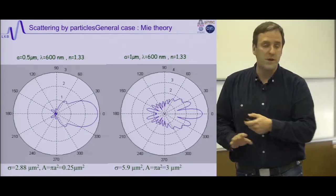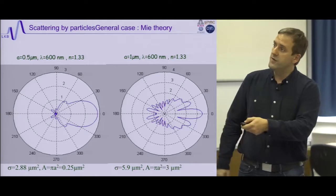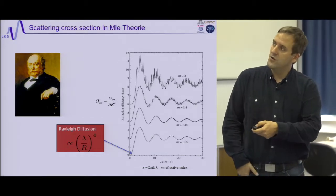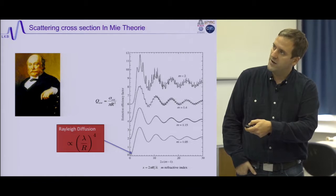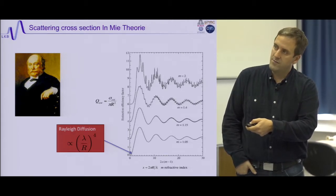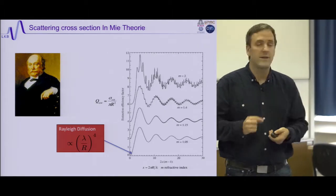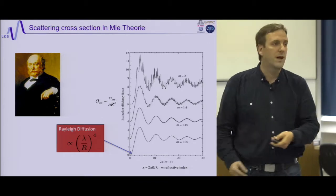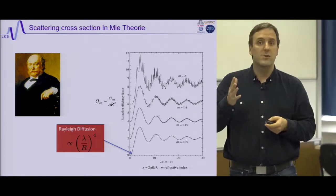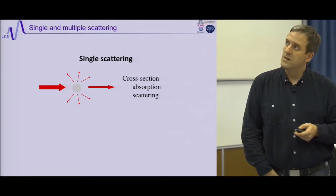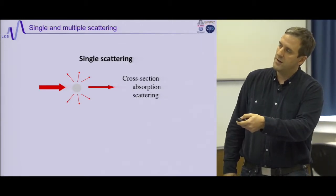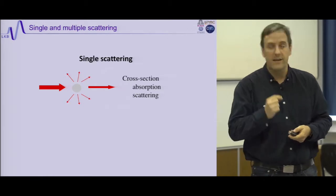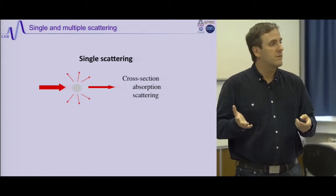This is completely described by Mie theory. To summarize: the scattering cross-section as a function of particle radius relative to wavelength is very small for tiny particles (Rayleigh scattering), then has resonances depending on the particle's refractive index, oscillates, and eventually reaches a plateau near the geometrical cross-section. So in summary: I send light on a particle, I have scattering, some unscattered light continues forward slightly attenuated, and I have a cross-section for absorption and a scattering radiation pattern.